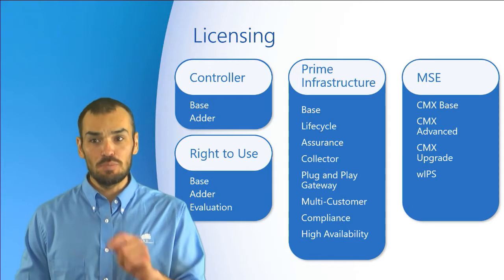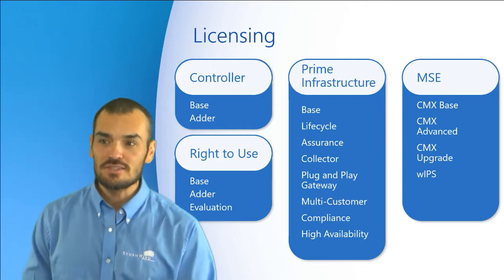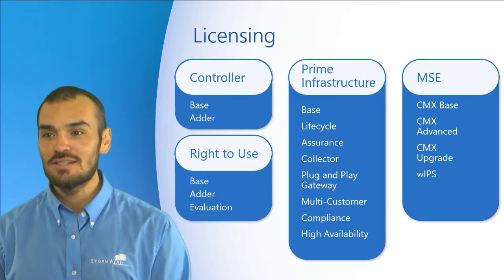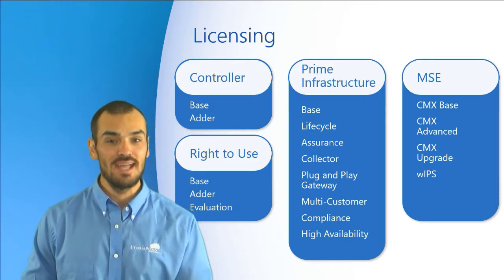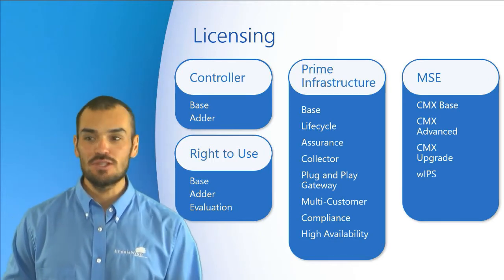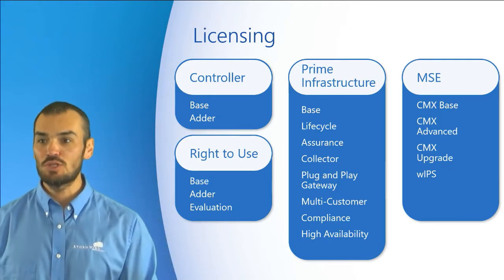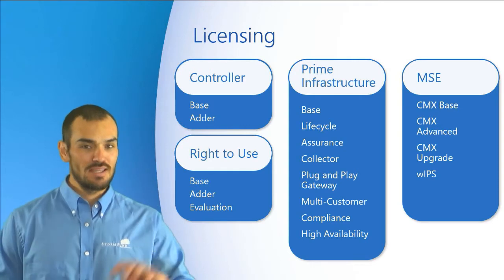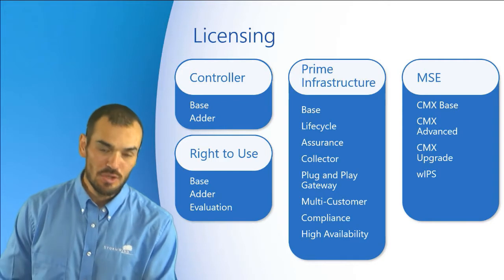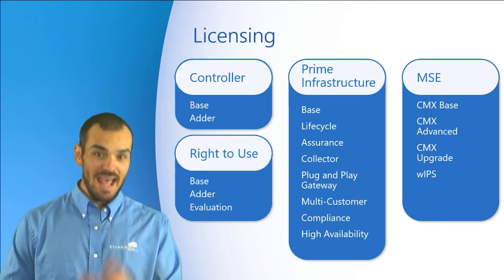The base license is intended to support both the standard and premium software sets. It used to be known as the W-plus license, but now it's called the base license. It includes Datagram Transport Layer Security, aka DTLS, to provide encryption for increased data security. It also has support for the Office Extend access points, enterprise mesh support, CAPWAP data encryption, and access points cannot be managed without at least the base license.